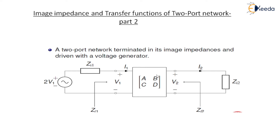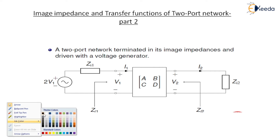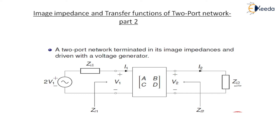The figure shows a two-port network which has input impedance Zi1 and output impedance Zi2. The output port is terminated by load impedance Zi2, where Zi1 and Zi2 are also called image impedances, because Zi1 equals Z-in-1 and Zi2 equals Z-in-2. This is to satisfy the maximum power transfer theorem. Port 1 is applied by voltage source 2V1. Now we calculate the parameters one by one.